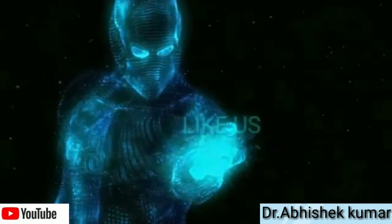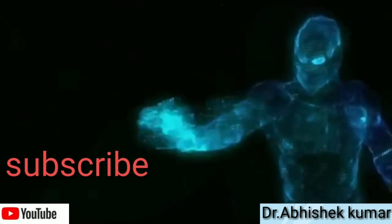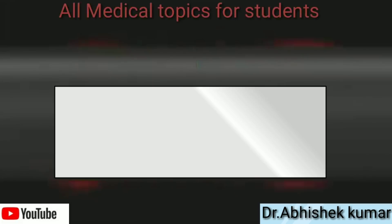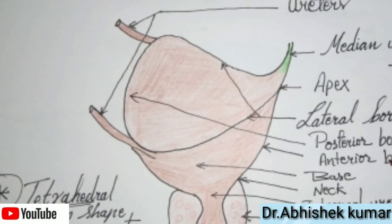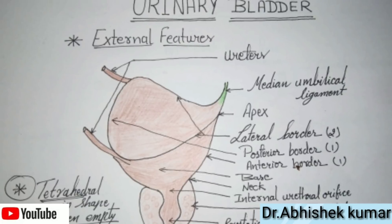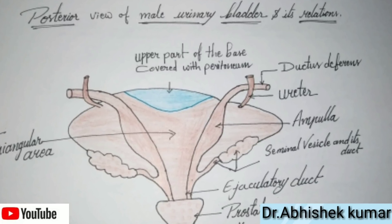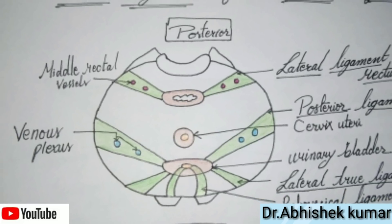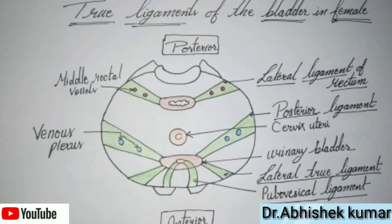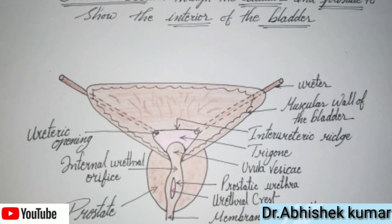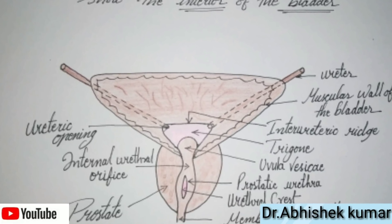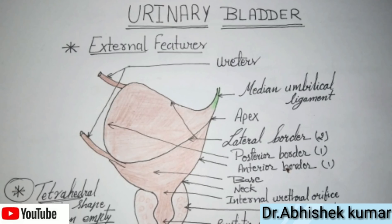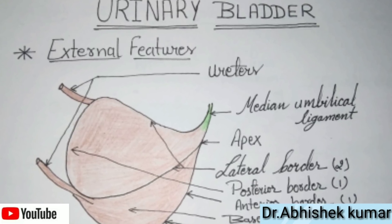Namaste everyone, welcome to our YouTube channel Dr. Isaac Kumar. Today we are going to learn about the anatomy of the urinary bladder in four parts. First we'll see the external features of the urinary bladder, then the posterior view of the male urinary bladder and its relations, then the true ligaments of the urinary bladder in the female, and finally the coronal section through the bladder and the prostate showing the interior of the bladder.